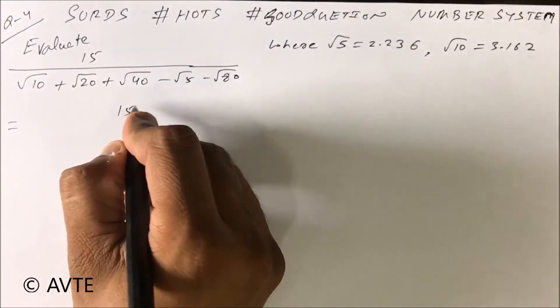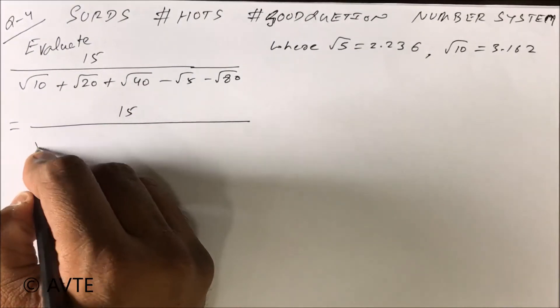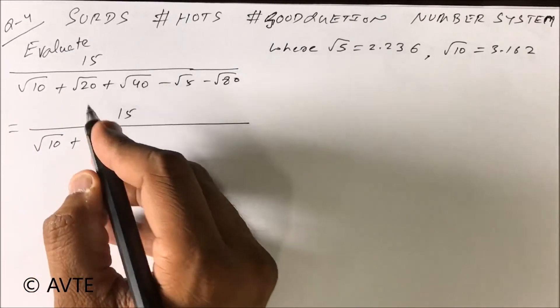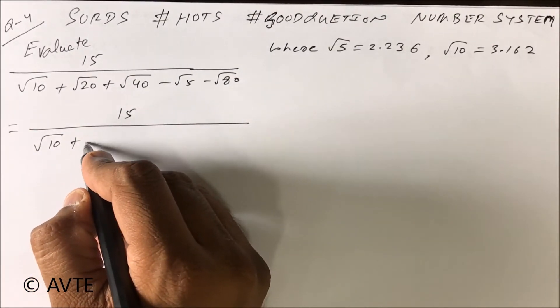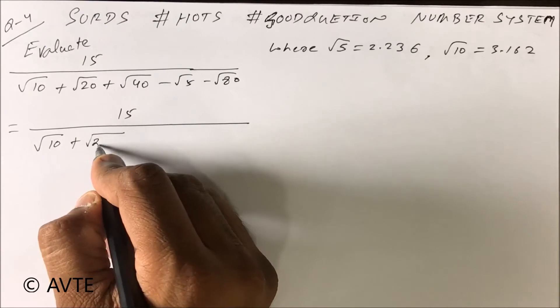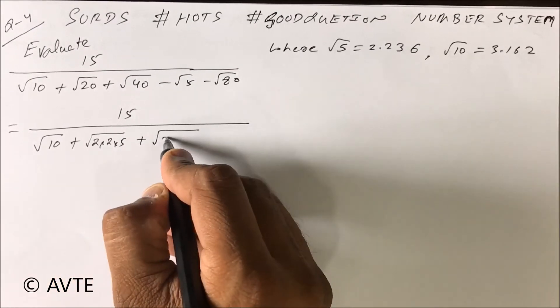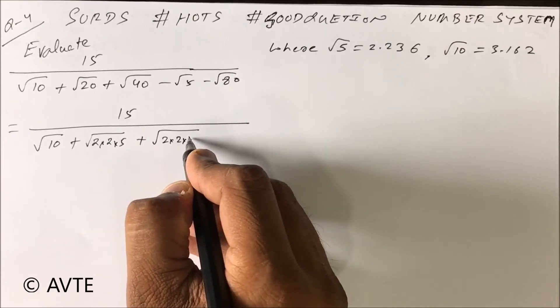Root 10 cannot be changed into simpler form. Root 20 can be changed - this is root 20 is 2 into 2 into 5, and root 40 is 2 into 2 into 2 into 5.